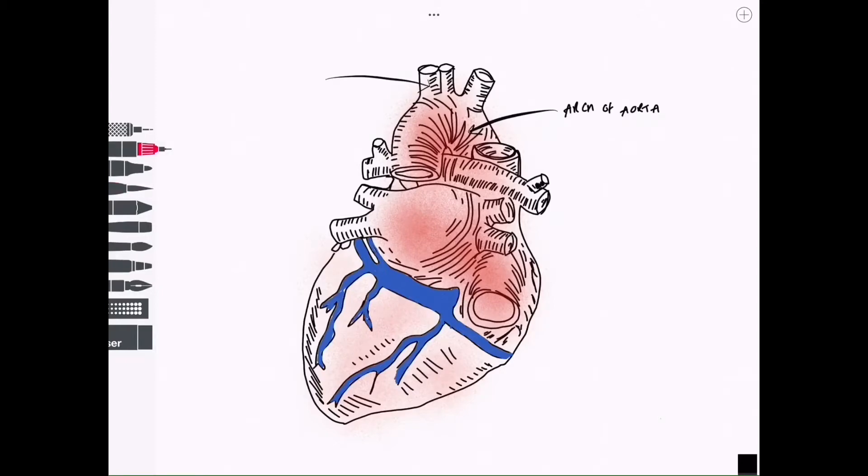We're going to label the major branches of the aorta in reverse order, so those on the left hand side first: the left subclavian artery, followed by the left common carotid artery. Remember on the left hand side the common carotid has its own branch.